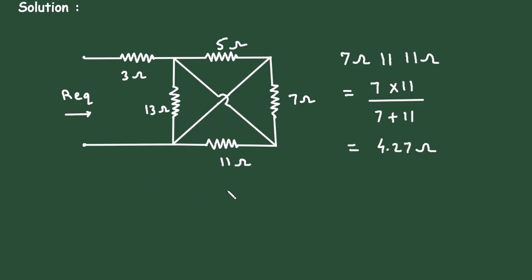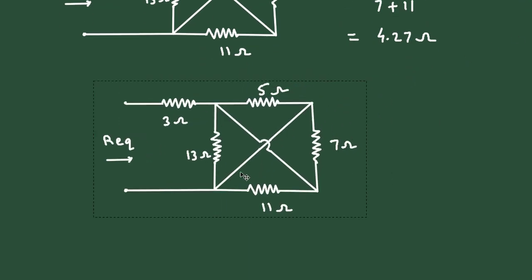Again, if we redraw this circuit, this will become a single resistance of 4.27 ohm.